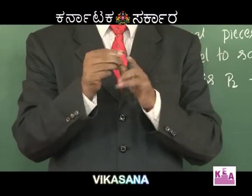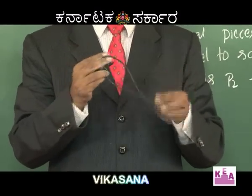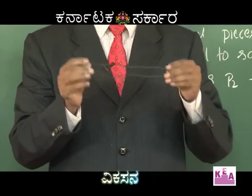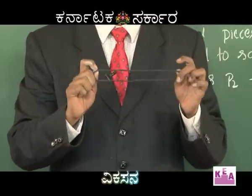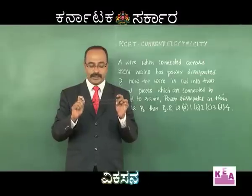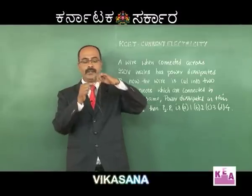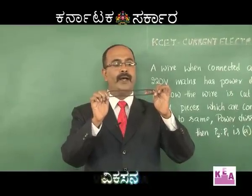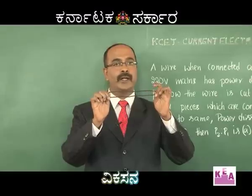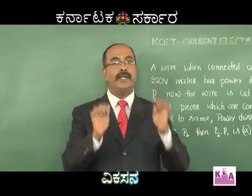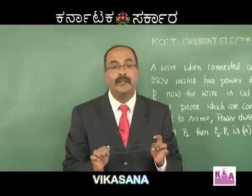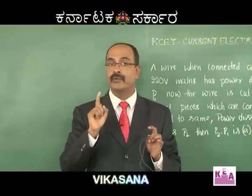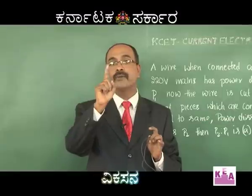Now I cut the wire into two parts and connect them in parallel. The equivalent resistance across these is: each piece has resistance R/2, so R/2 parallel R/2 gives R/4. P2 is given by V² / (R/4), which equals 4 × V² / R.